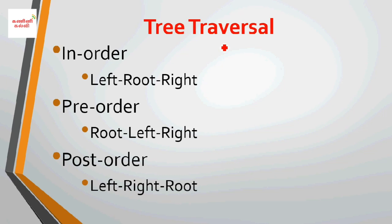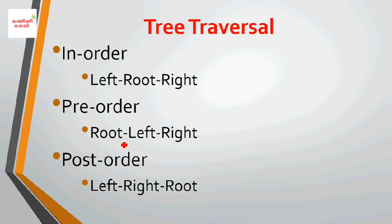Tree traversal is one important topic. There are three traversals: in-order, pre-order, and post-order. In-order traversal processes left, then root, then right. Pre-order is root first, then left, then right. Post-order is left, then right, then root. So in-order has root in the middle, pre-order has root first, and post-order has root at the end.